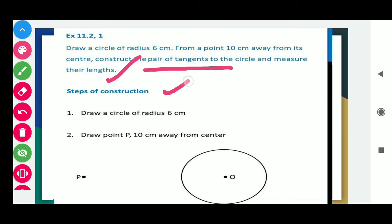Steps of construction are: first draw a circle of radius 6 cm. Here you can see a circle with O as center and radius of 6 cm, and we take a point 10 cm away from the center. Notice one thing, if radius is 6 cm then you need to take a point that is 4 cm more. So take a point P that is 10 cm away from its center.